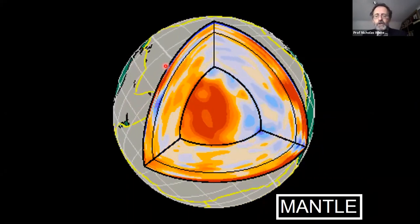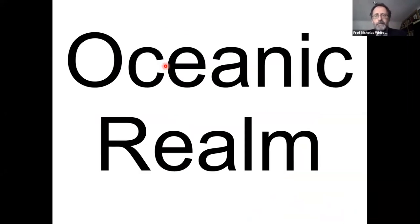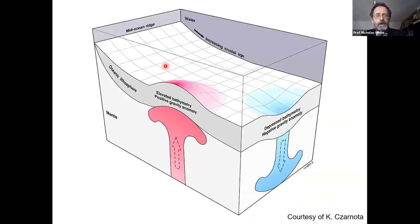The reason why the geoid is knobbly is because of viscous flow within the deep Earth. What's generating the knobbliness is essentially lateral mass changes deep within the mantle, which we've become as a community much better at imaging using seismic tomography.